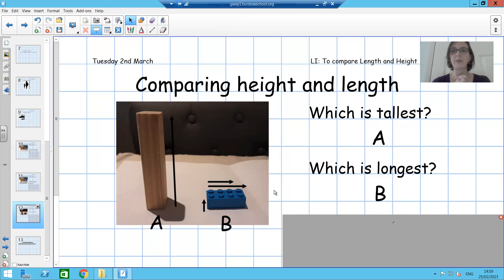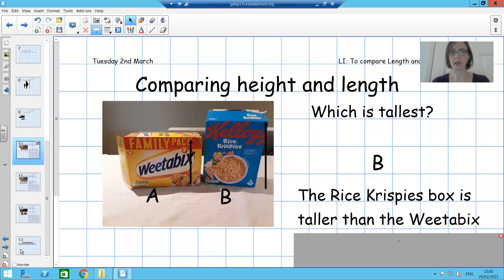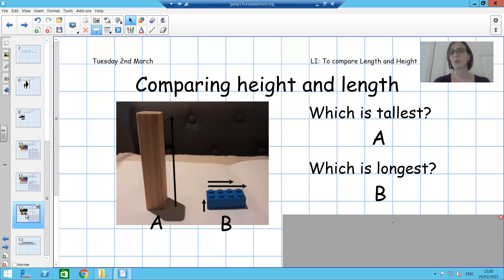So well done if you got all of those right. So your activity today is to go away and find a couple of items. They could be building bricks like I've used here, cereal boxes that I used in my earlier slides, maybe some toy cars you've got, or some teddies. Have a think, find some objects, work out which is the tallest, which one's the shortest, which one's the longest, which one's the shortest. And if you really want to challenge yourself, write me some lovely sentences explaining which one is which.